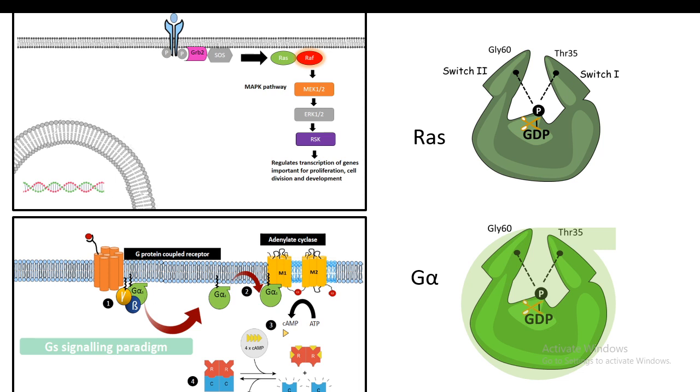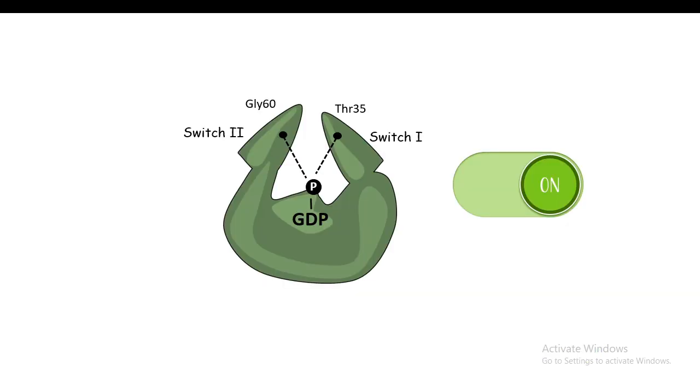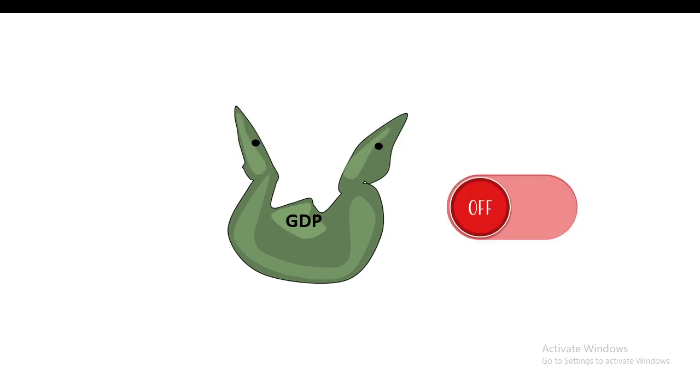Ras is a GTP hydrolyzing protein, so it needs GTP for its function. In a GTP-bound state, Ras is on. In this state, Ras is interacting with the switch 1 and switch 2 helix in such a way that it looks like a closed claw of a crab. But when GTP is hydrolyzed and the phosphate is gone, there is a rapid conformational change and the switch helices